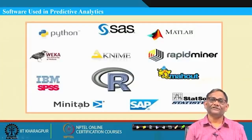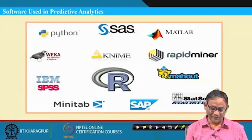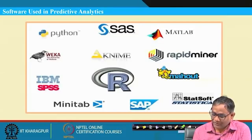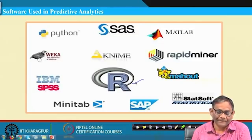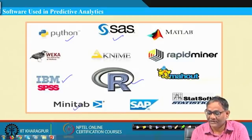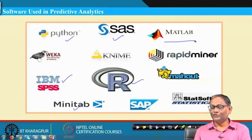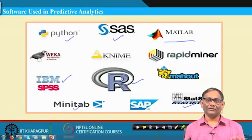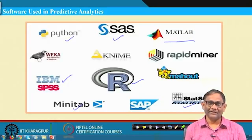There are many software tools available for regression analysis: Python, SAS, Minitab, Weka, RapidMiner, SPSS, MATLAB, Statsoft, and others. Open-source software like R and Python are very popular. Commercial software includes SAS, SPSS, Minitab, and MATLAB. These tools make your analysis easier because you do not need an in-depth understanding of the mathematical treatment of regression.